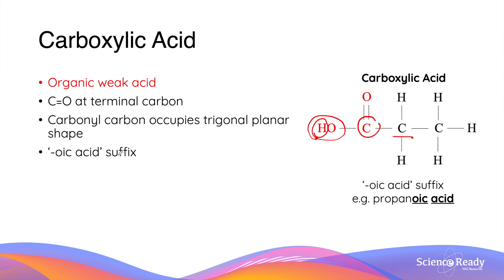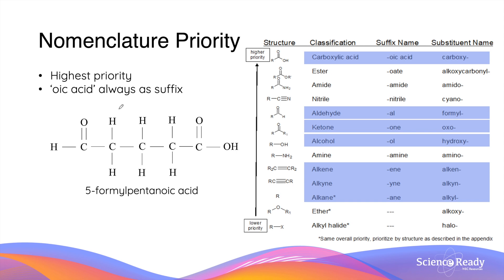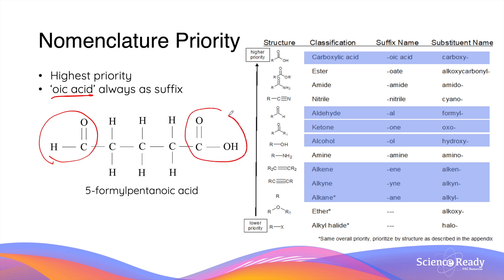When naming carboxylic acids, the suffix -oic acid is used. For example, in a molecule with three carbon atoms in the longest chain, the name becomes propanoic acid. Carboxylic acids have the highest priority when it comes to naming. This means in any molecule containing a carboxylic acid, it will always take the suffix -oic acid. For example, in a molecule with both an aldehyde and a carboxylic acid functional group, the carboxylic acid has higher priority and takes the suffix -oic acid, while the aldehyde takes the prefix formyl. So the name becomes 5-formyl-pentanoic acid.